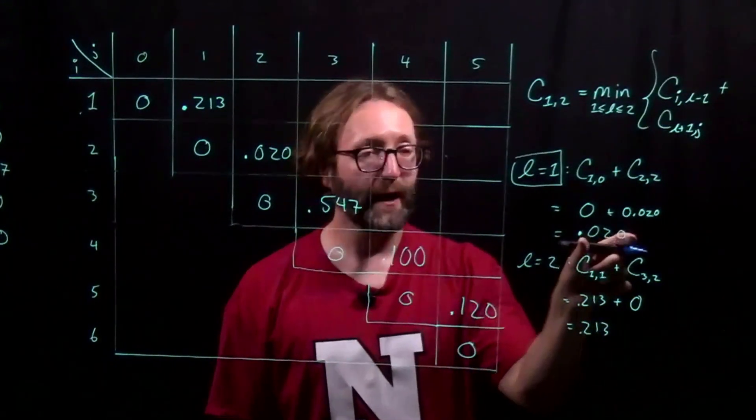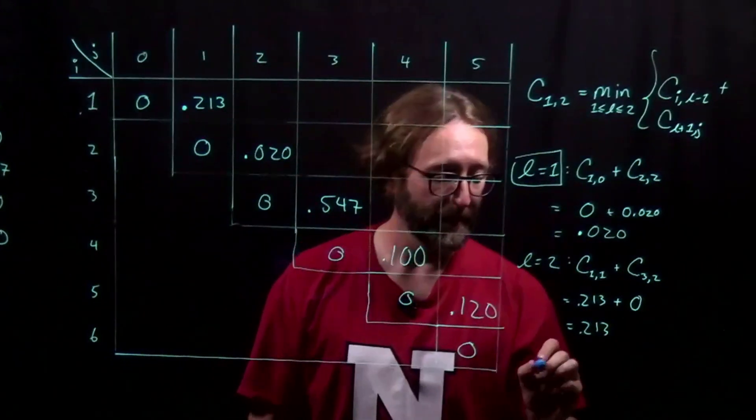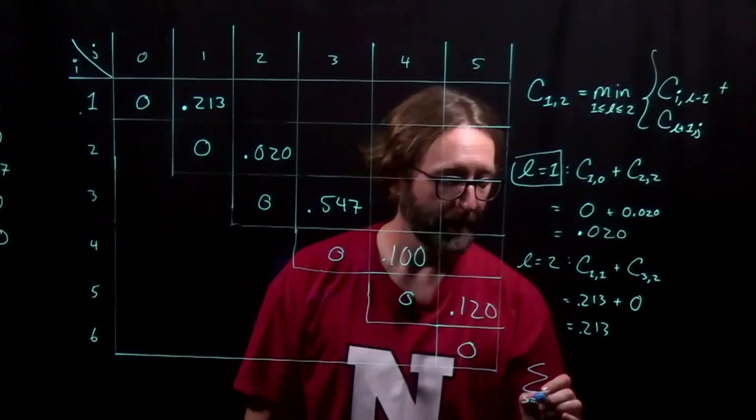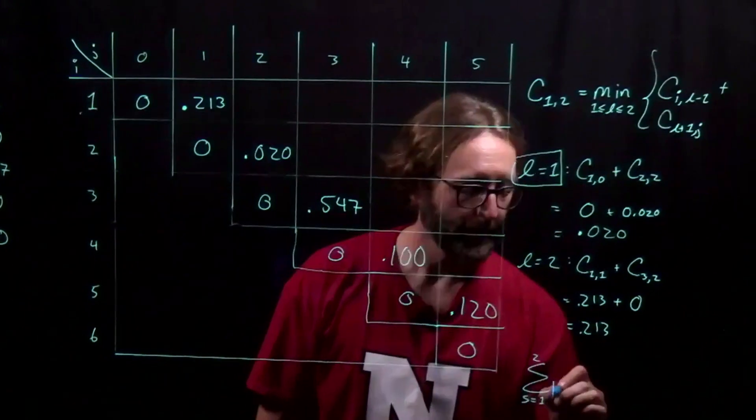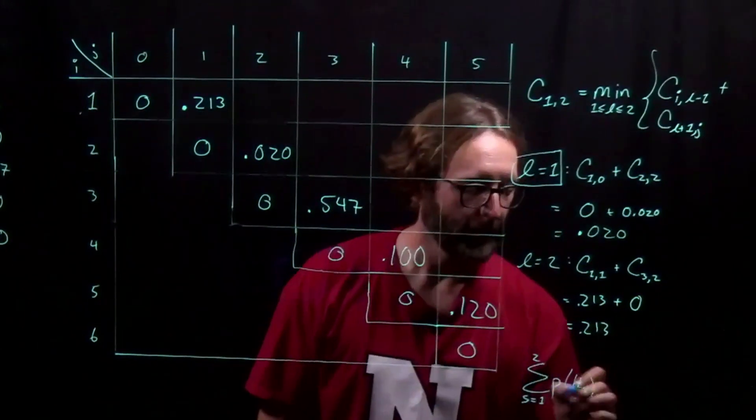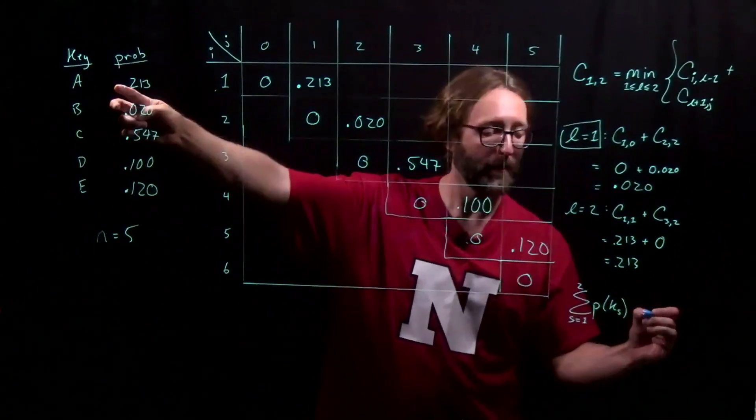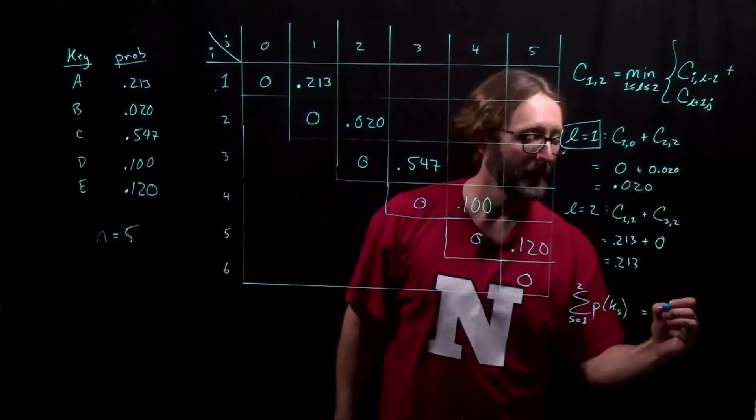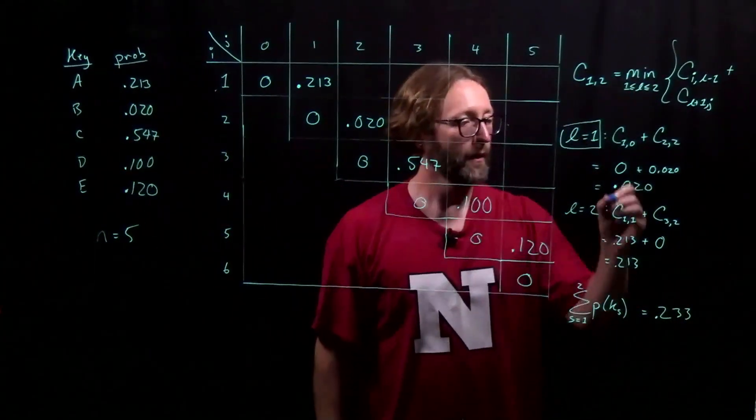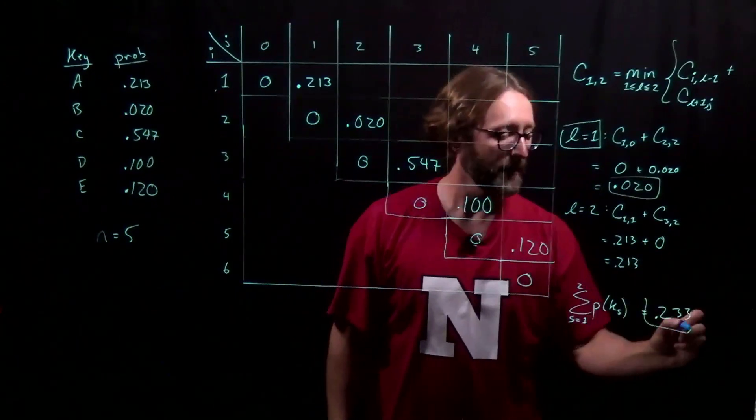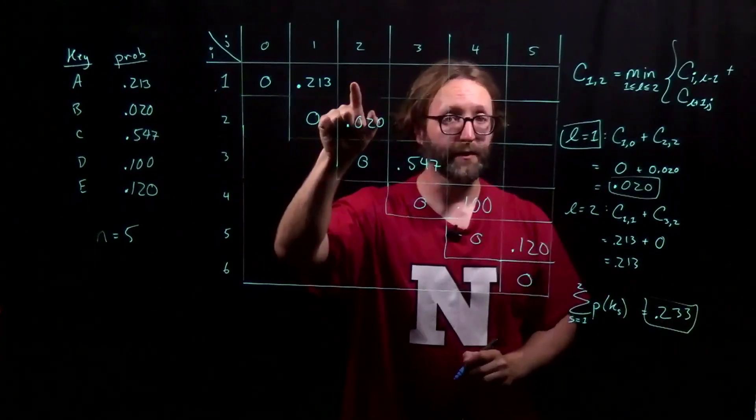We would save L off into our root table. And we would put this value plus the summation of the probability of these two keys. This value plus this value is the value that gets entered into the table.